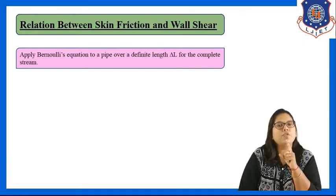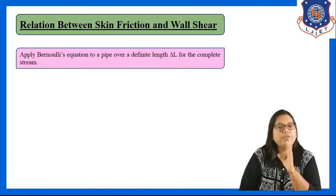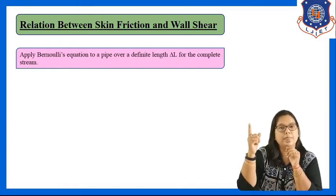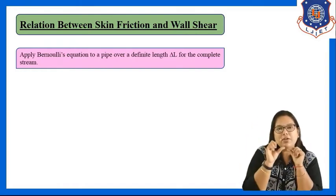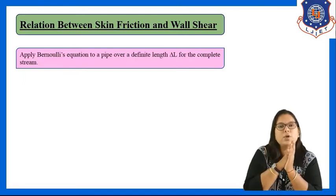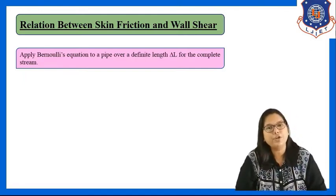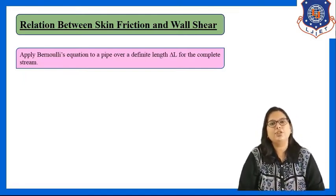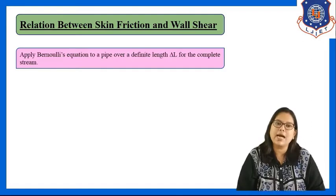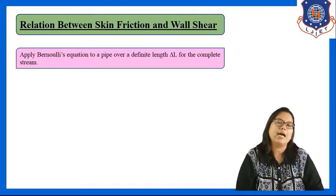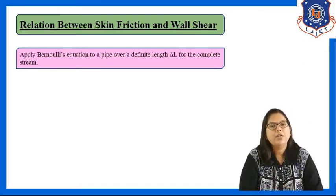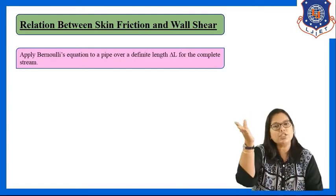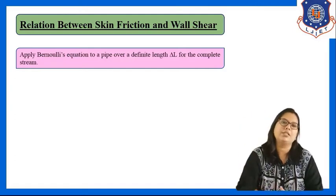Here we assume the system which we assumed for the previous derivation — a tube with a small discrete element of fluid. The shear stress acting on that fluid is tau, the radius of that fluid element is r, and the radius of the pipe is rw. For that system, we are deriving this relation.